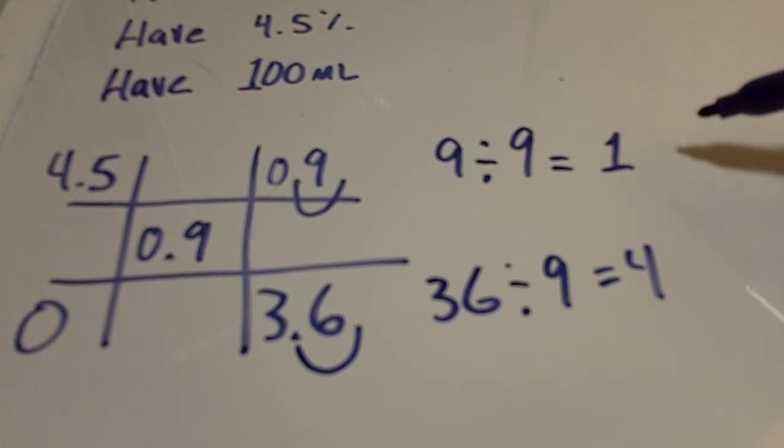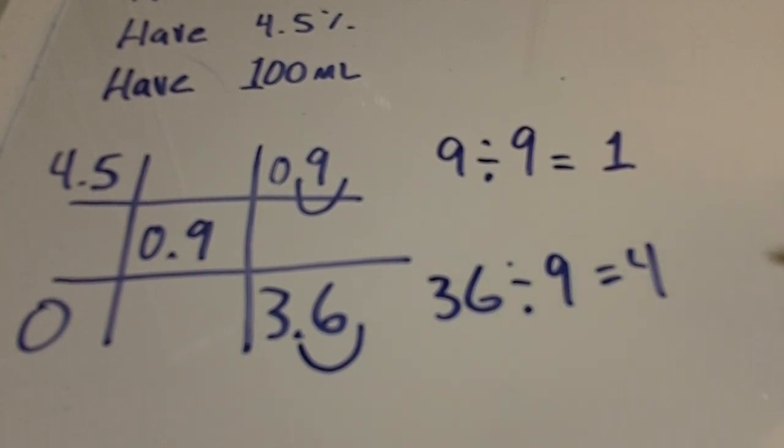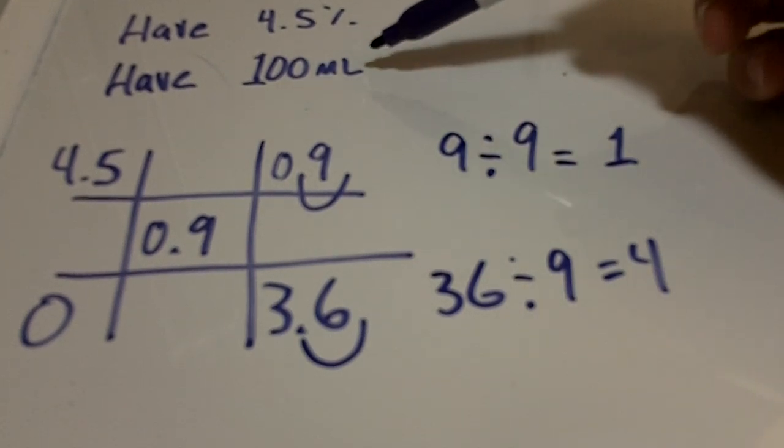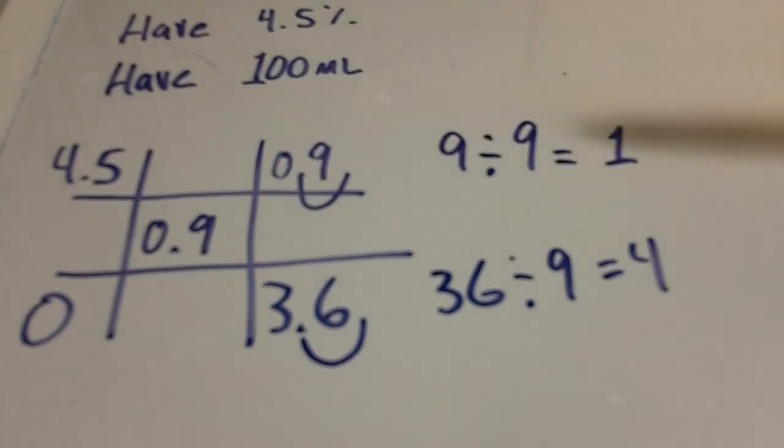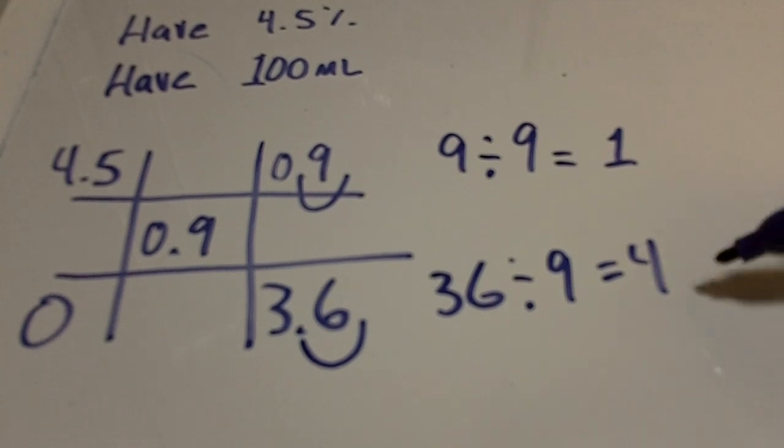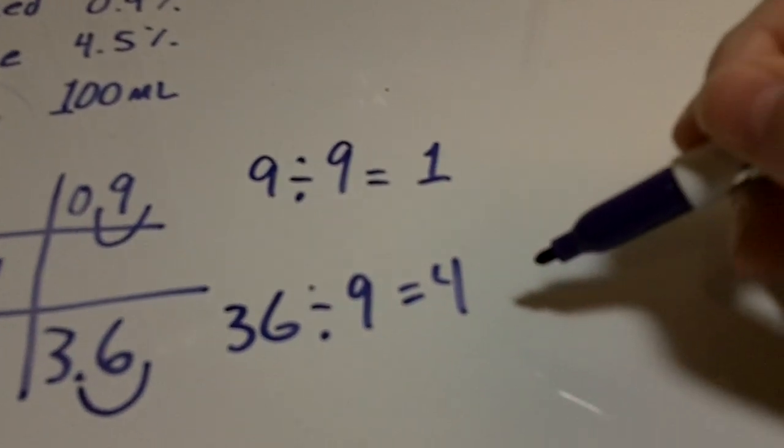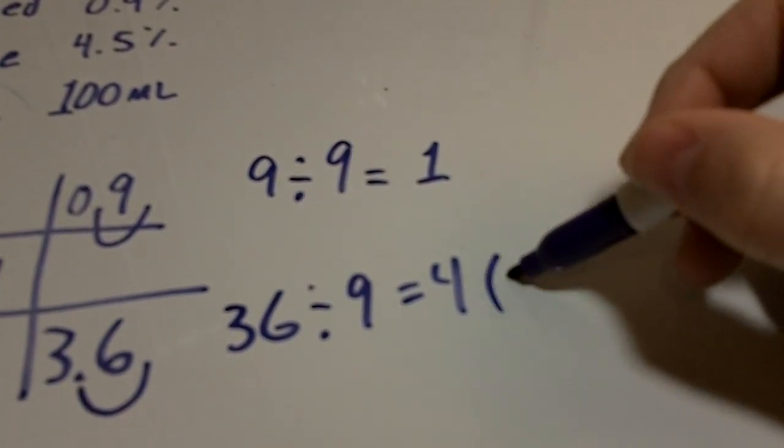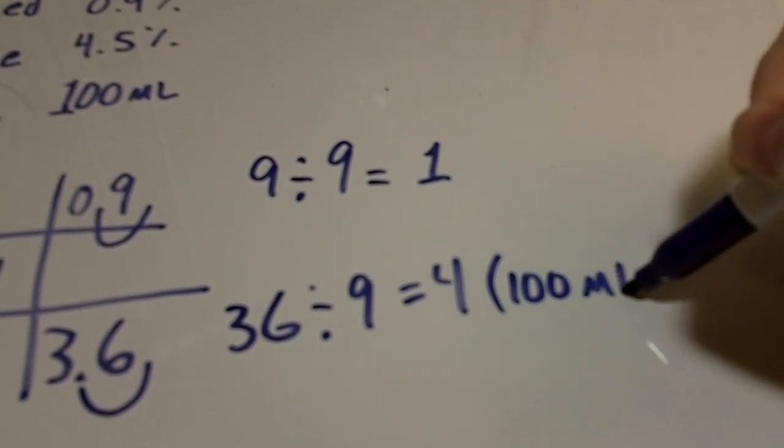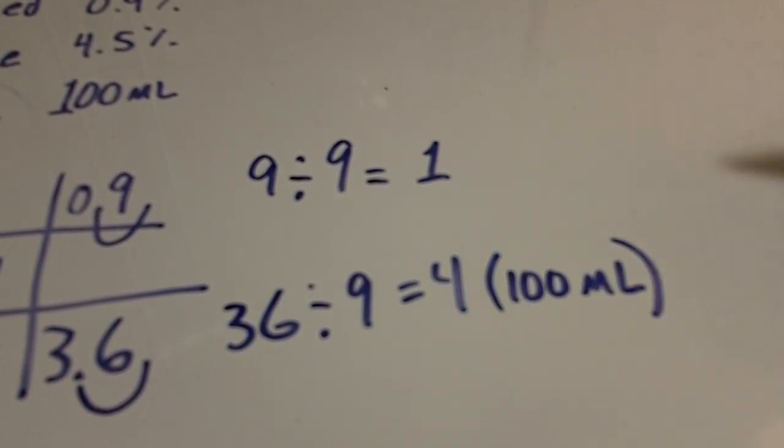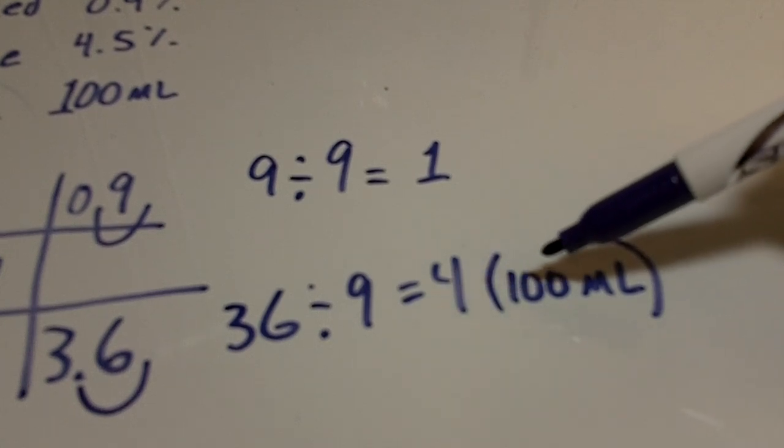And so since I already know that I have 100 milliliters of the water, I can assign that to this number here. So 100 milliliters. Okay, so if four parts equals 100 milliliters, then I know that one part would have to equal 25 milliliters.